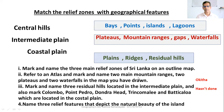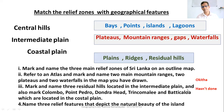Coastal Plain in green colour, Intermediate Plain in another colour, Central Hills in another colour — refer to an atlas. Mark and name two mountain ranges, two plateaus, and two waterfalls in the map you have drawn. Also mark and name three residual hills located in the Intermediate Plain.